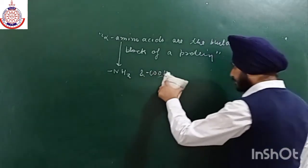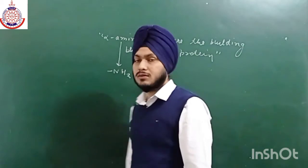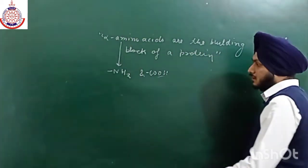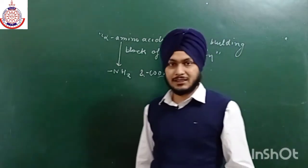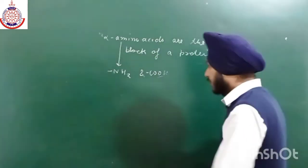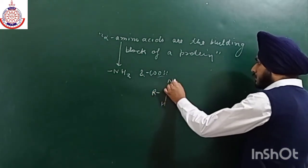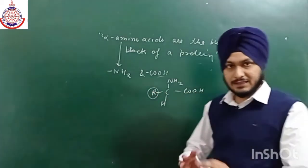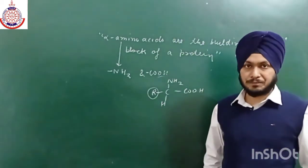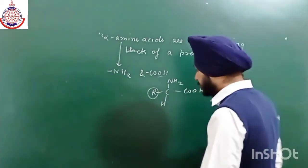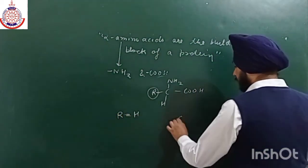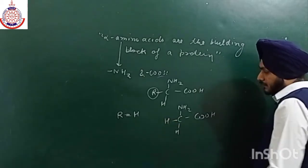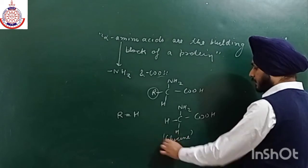There are about 20 amino acids which are known to us. The basic difference between them is in the R group — this R group is different in all 20 amino acids. When the R group is H, the alpha amino acid is Glycine, which is the smallest alpha amino acid. When R is CH3, it is Alanine, and when R is an isopropyl group, it is Valine.